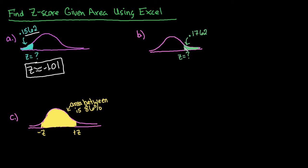Alright, for the next one, we have to think about it in terms of area to the left. If I plugged in the 0.1762, that is going to give me a negative z-score because it's less than 50%.